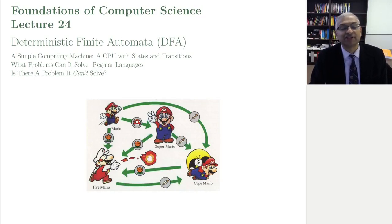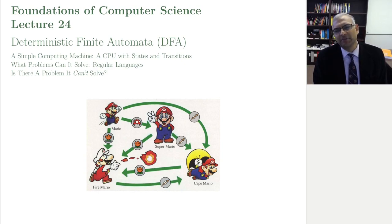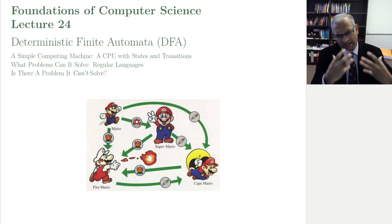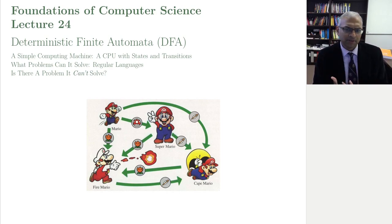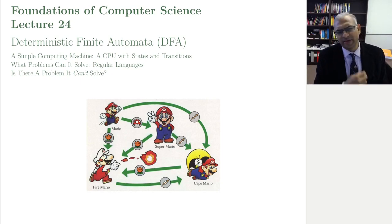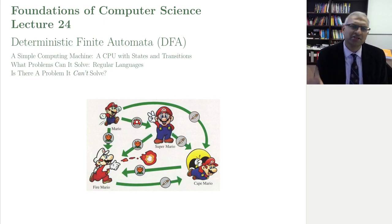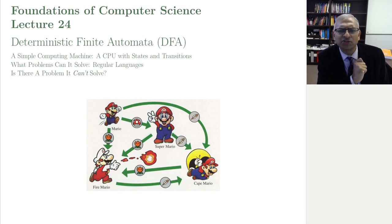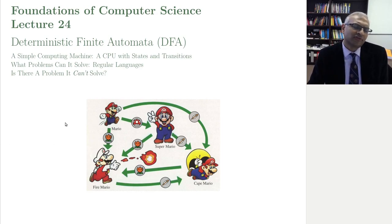Hi there, welcome to lecture 24. Today is an exciting day because we are going to introduce our first very simple computing machine. It's an example of a model of computing, so we're really delving into the theory of computing. This computing machine — this model of computing — goes by many names: deterministic finite automata, finite state machines. We will just call them automata. The basic idea is captured by this cartoon from the very famous game Super Mario Brothers, where you can think of Mario himself as an automaton, a finite state machine.